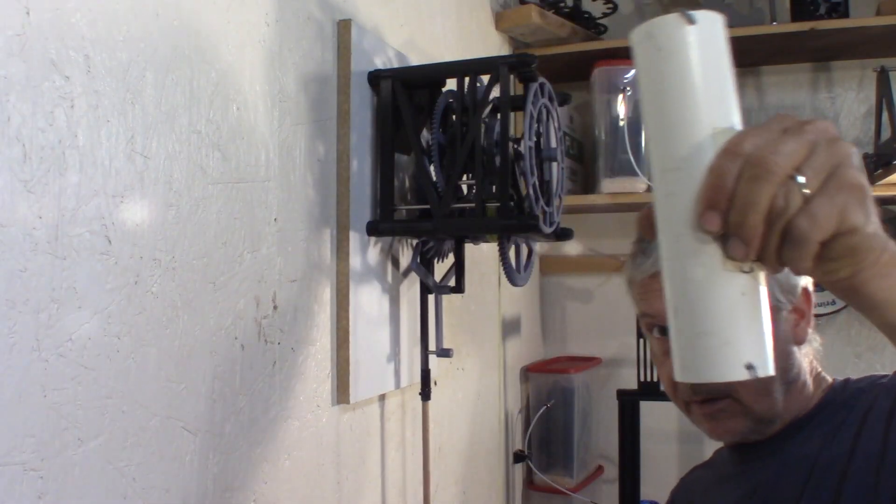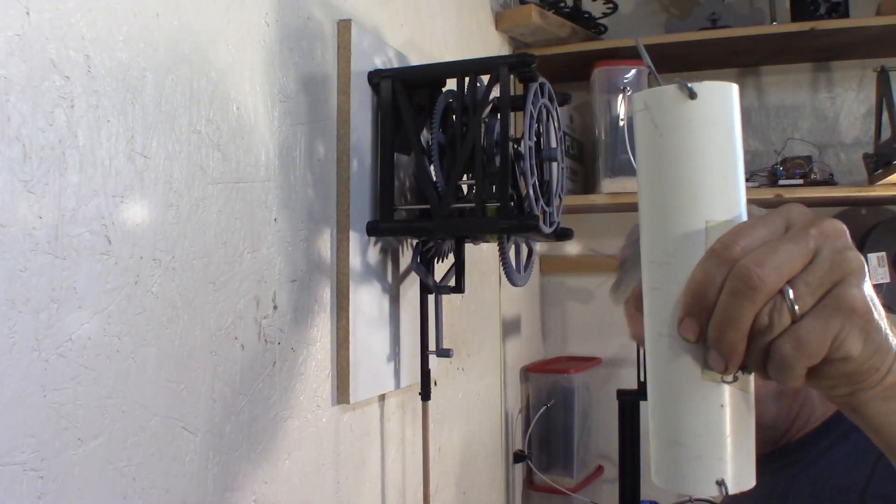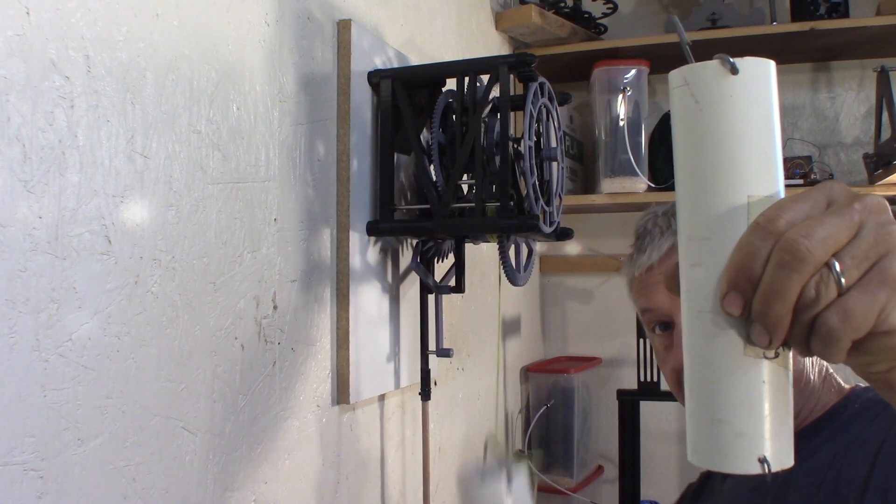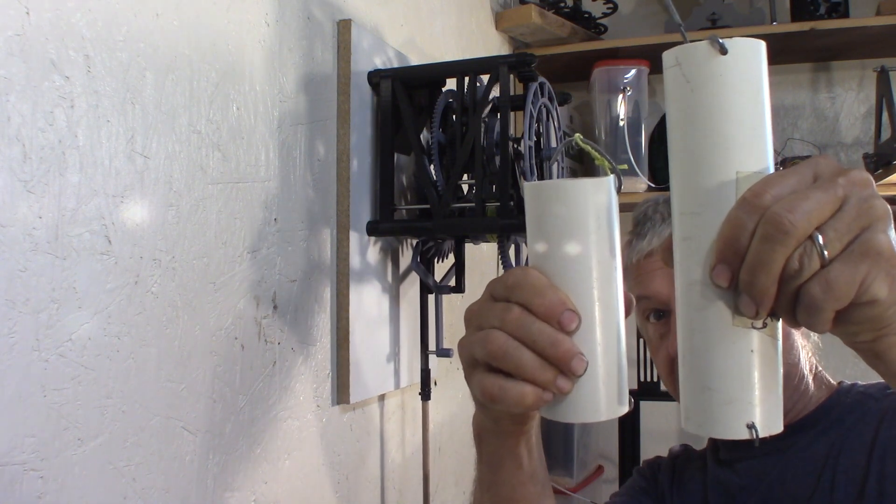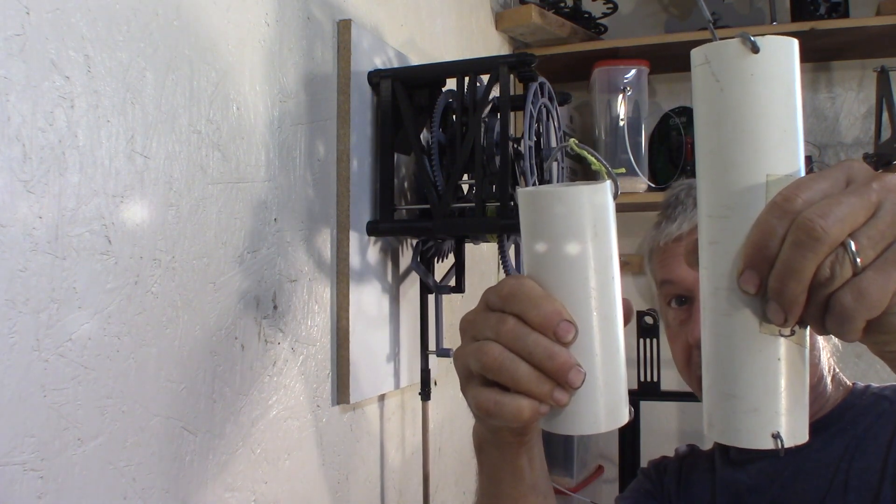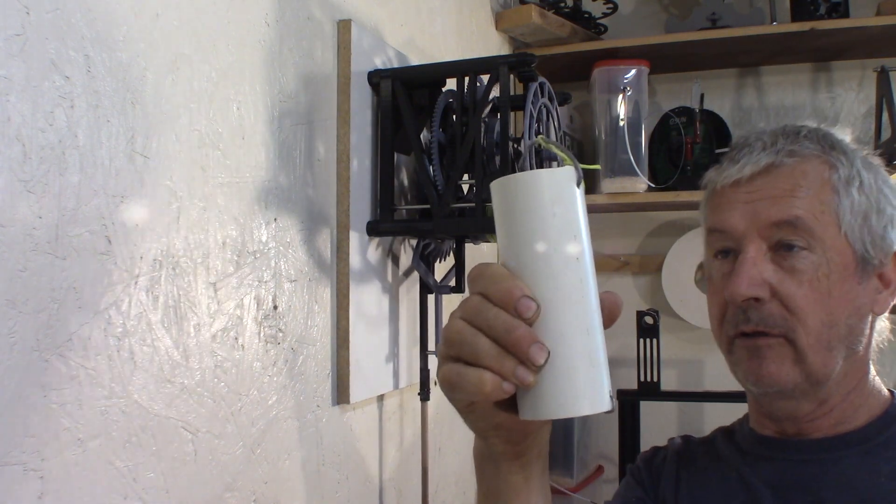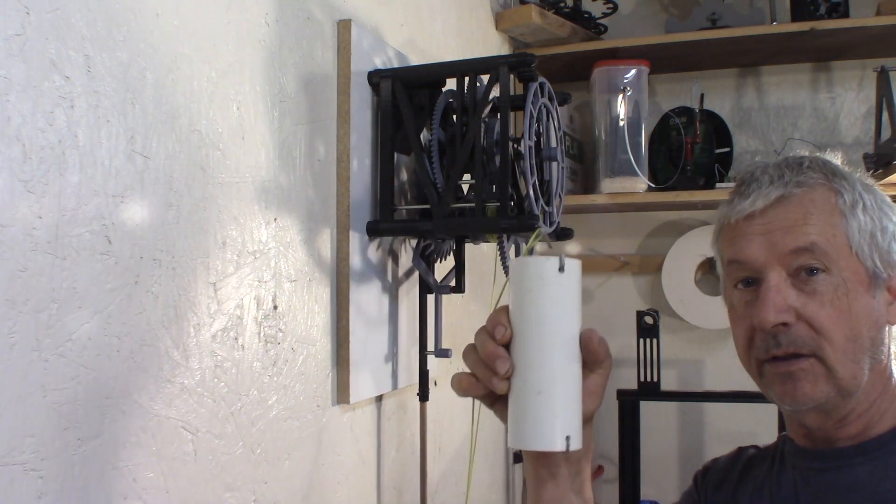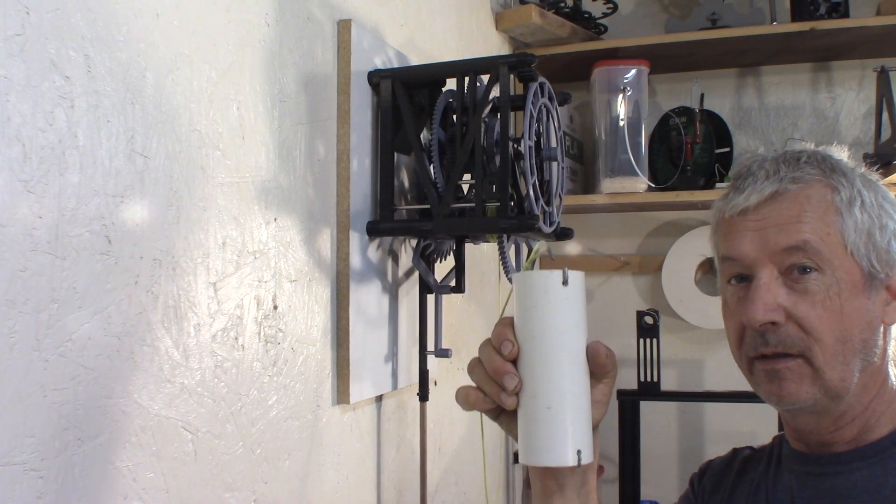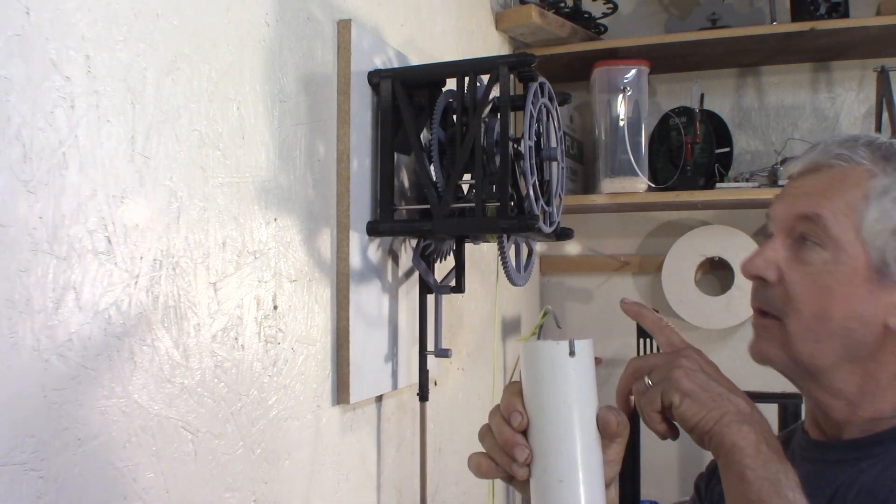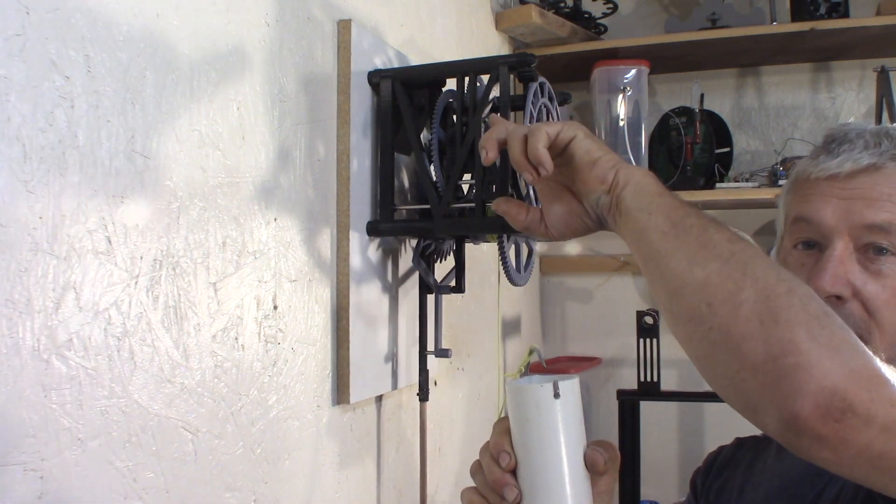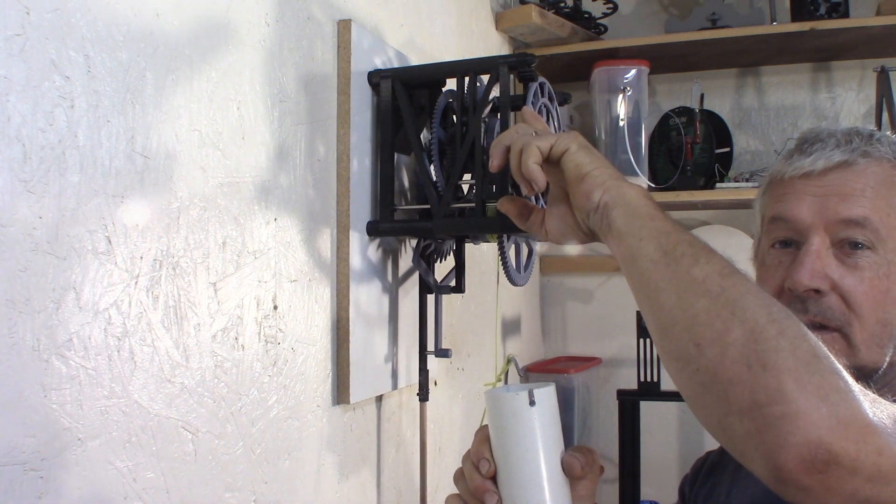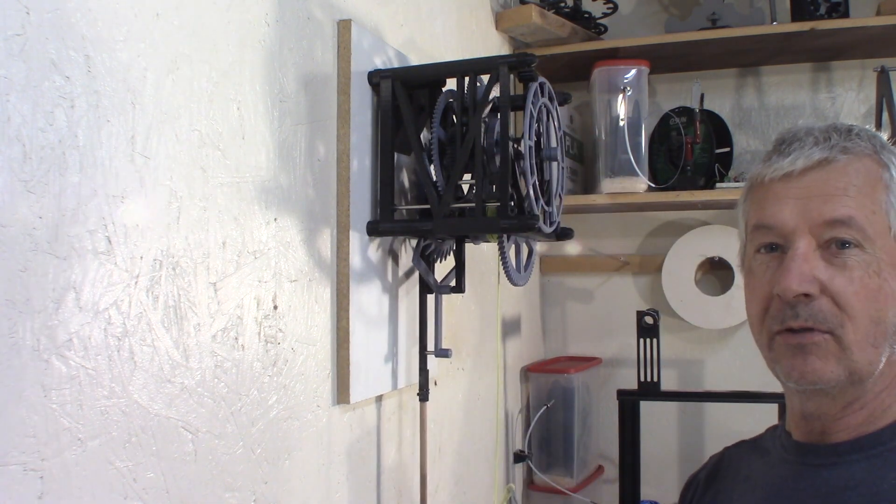That was the weight on the first generation. That's the weight on this one, so it's quite an improvement. I think that's two and a half kilos. And notice that when I lift up the weight the clock is still running because of the maintain power device in here. Pretty cool, huh?